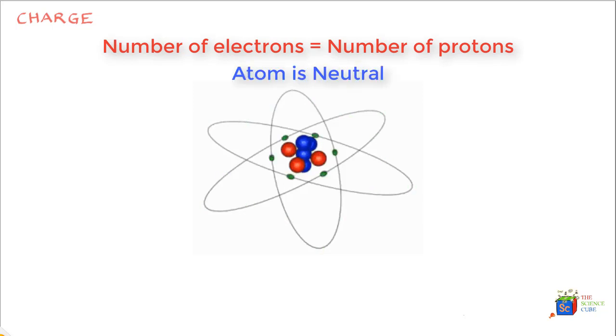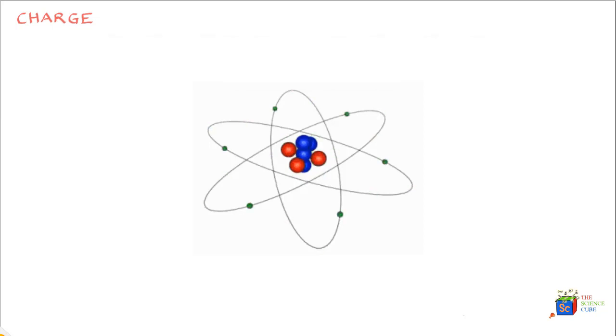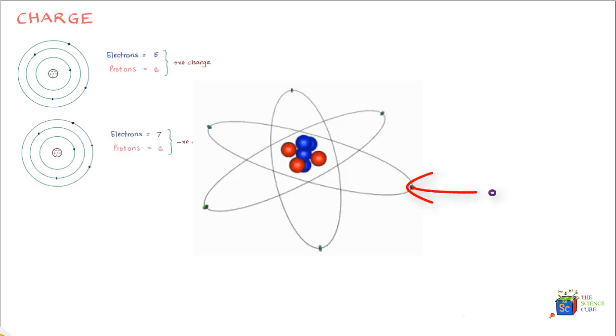Therefore, an atom that has one or more electrons removed obviously has more protons and hence more positive charge, and is therefore termed positively charged. Likewise, if the atom gains one or more electrons, the number of electrons become more than the number of protons and it becomes negatively charged.